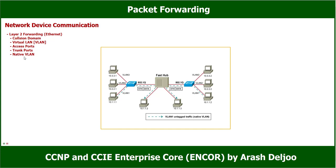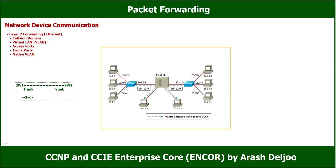Let me explain the native VLAN. Here we have a scenario with switch one connected to switch two. This interface is configured as a trunk using the dot1Q trunking protocol. When we have traffic from each VLAN, we add the tag of that VLAN to the traffic. For example, traffic from VLAN 2 is sent with tag 2, and traffic from VLAN 3 is sent with tag 3.